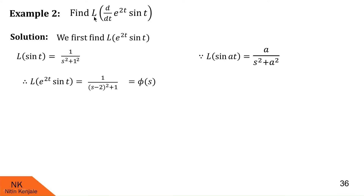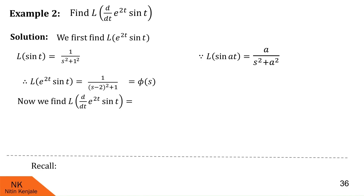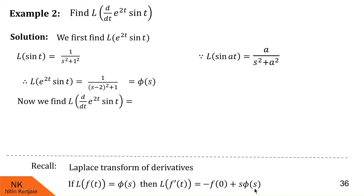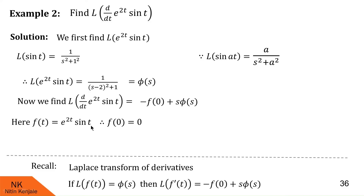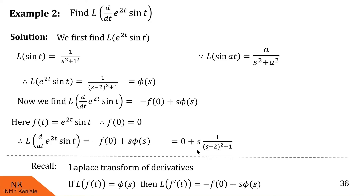Using the formula L{f′(t)} = s·φ(s) − f(0), and with f(t) = e^{2t} · sin t, we substitute t = 0: f(0) = e^0 · sin 0 = 1 · 0 = 0. Substituting f(0) = 0 and φ(s) = 1/((s − 2)² + 1), we get L{d/dt[e^{2t} · sin t]} = s · 1/((s − 2)² + 1) = s/((s − 2)² + 1).